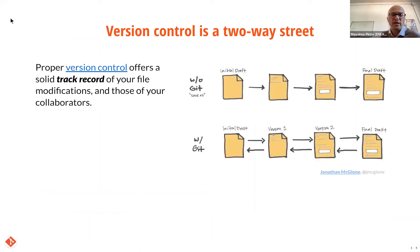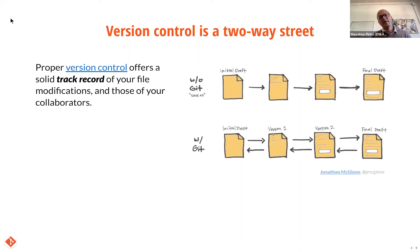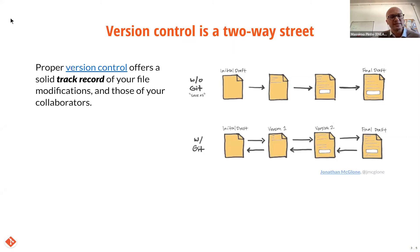Version control is a way to track the record of your file modifications — of yourself and of your collaborators. Typically, you start from a draft and save new versions in sequence. This is maybe a one-way scenario. But what you would really want is a two-way street — a way to go back to each version, to recover maybe a clever idea you forgot about. When you use Git, you enable that two-way street.